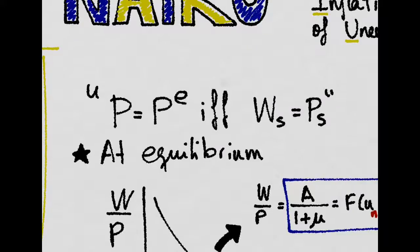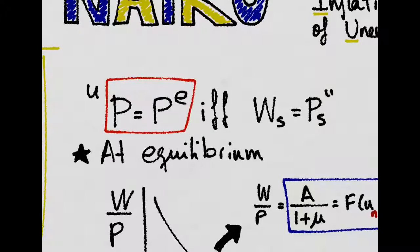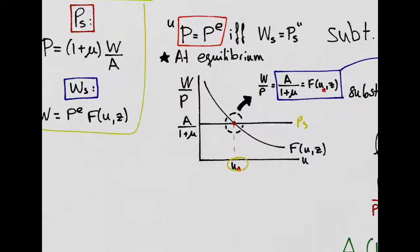Remember we said that prices equal the expected level of prices, and that's how we got the natural unemployment rate by equating the wage setting and the price setting.